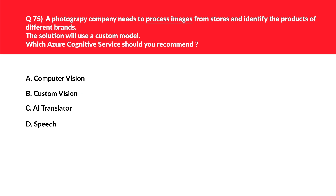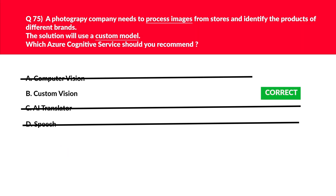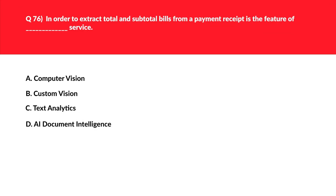Options C and D — AI Translator and Speech — are not related to image processing, so we eliminate them. Option A, Computer Vision, can identify basic things like brand logos, but when a custom model is required, as indicated by the keyword in the question, Custom Vision is needed. Computer Vision won't work for custom models, so the correct answer is option B — Custom Vision.